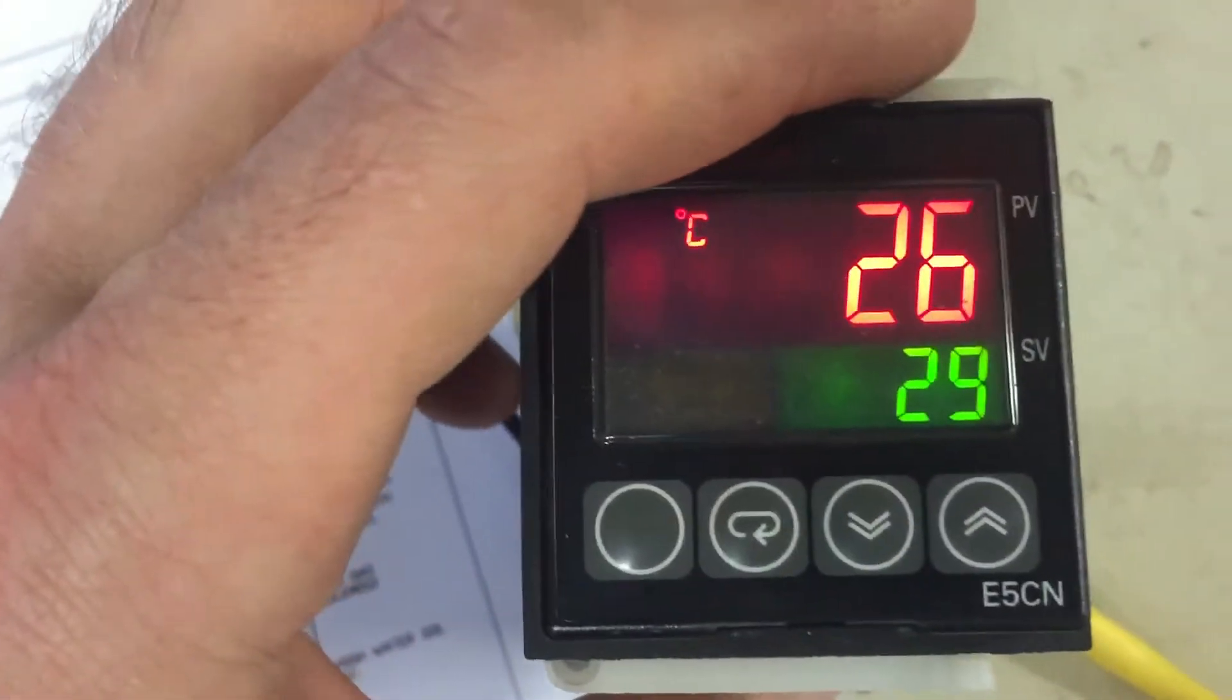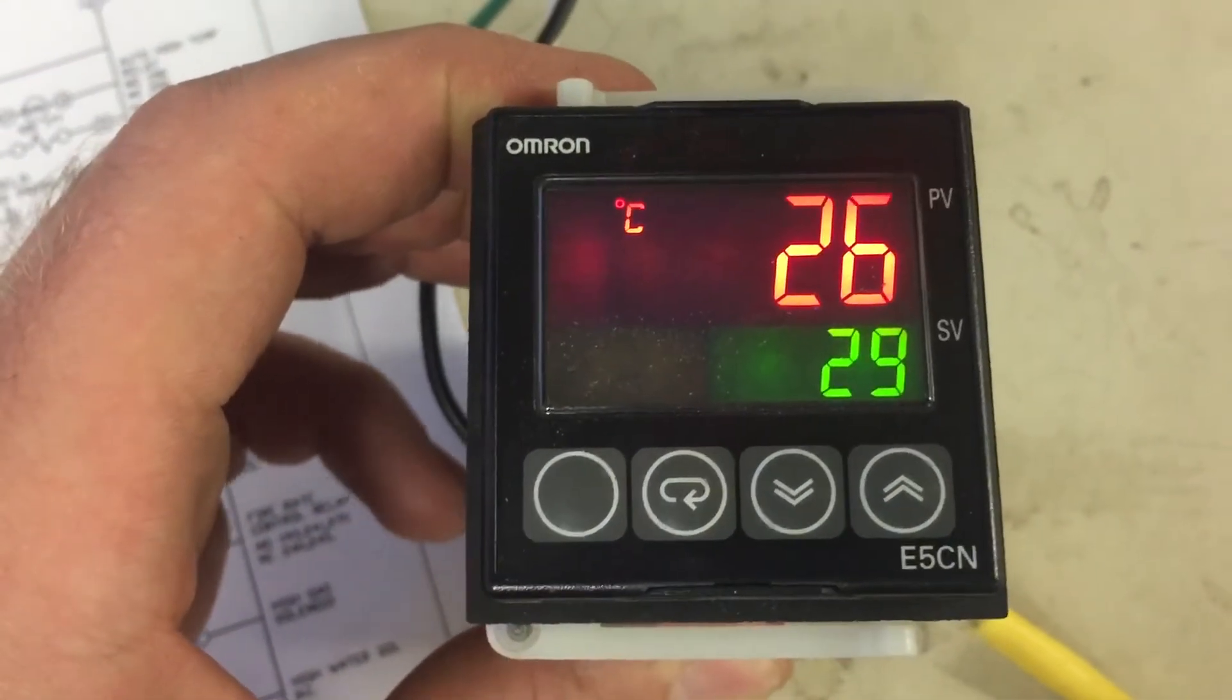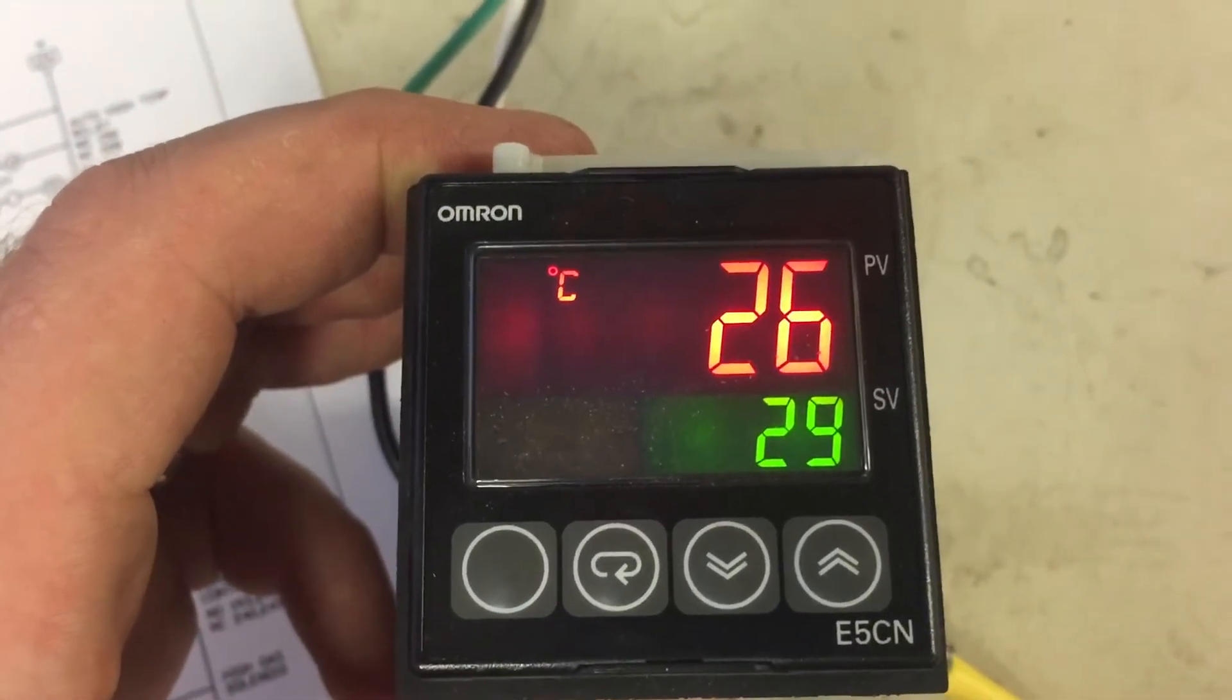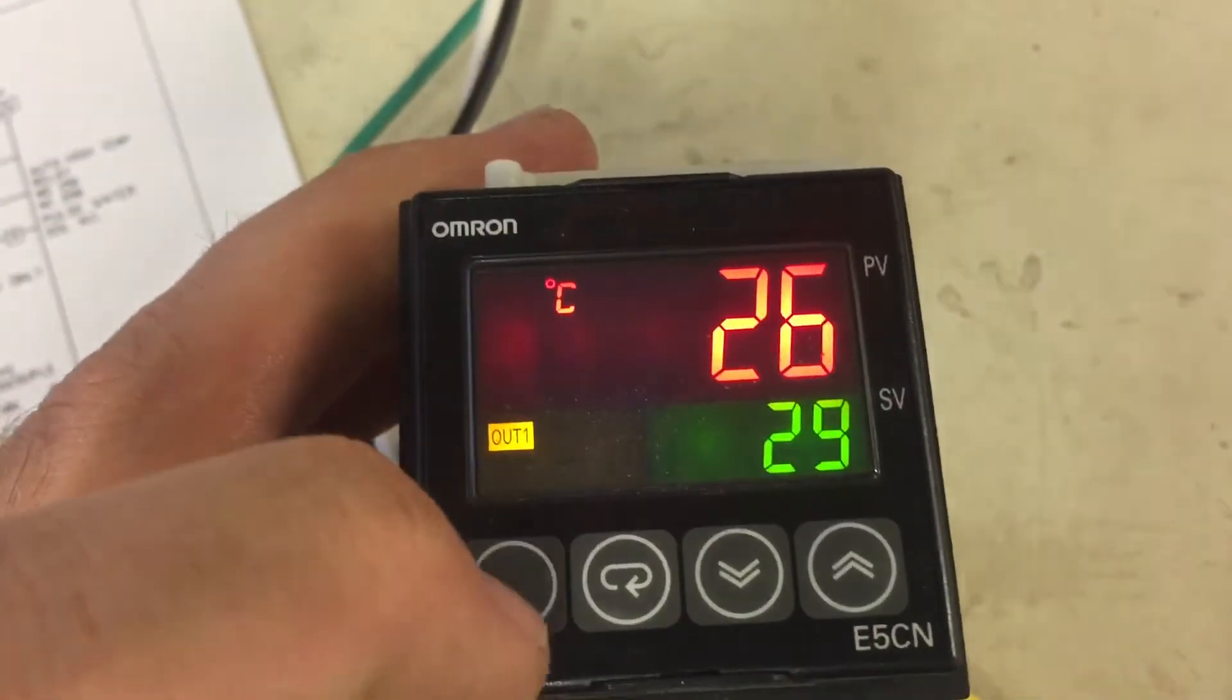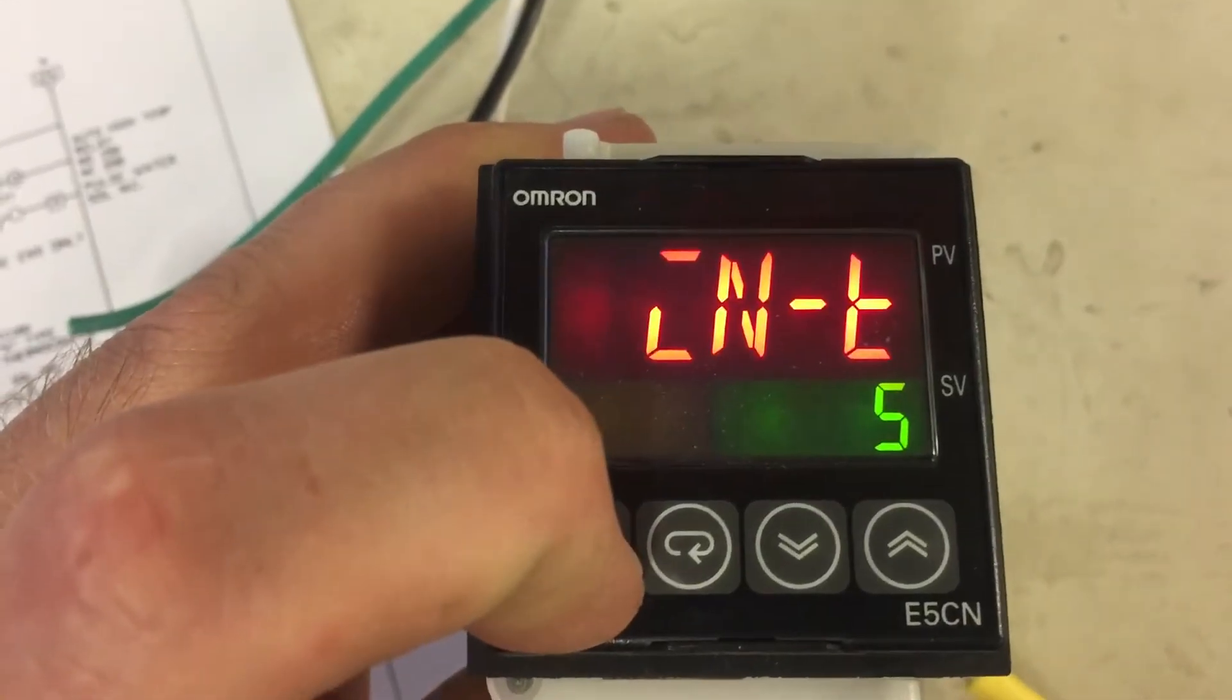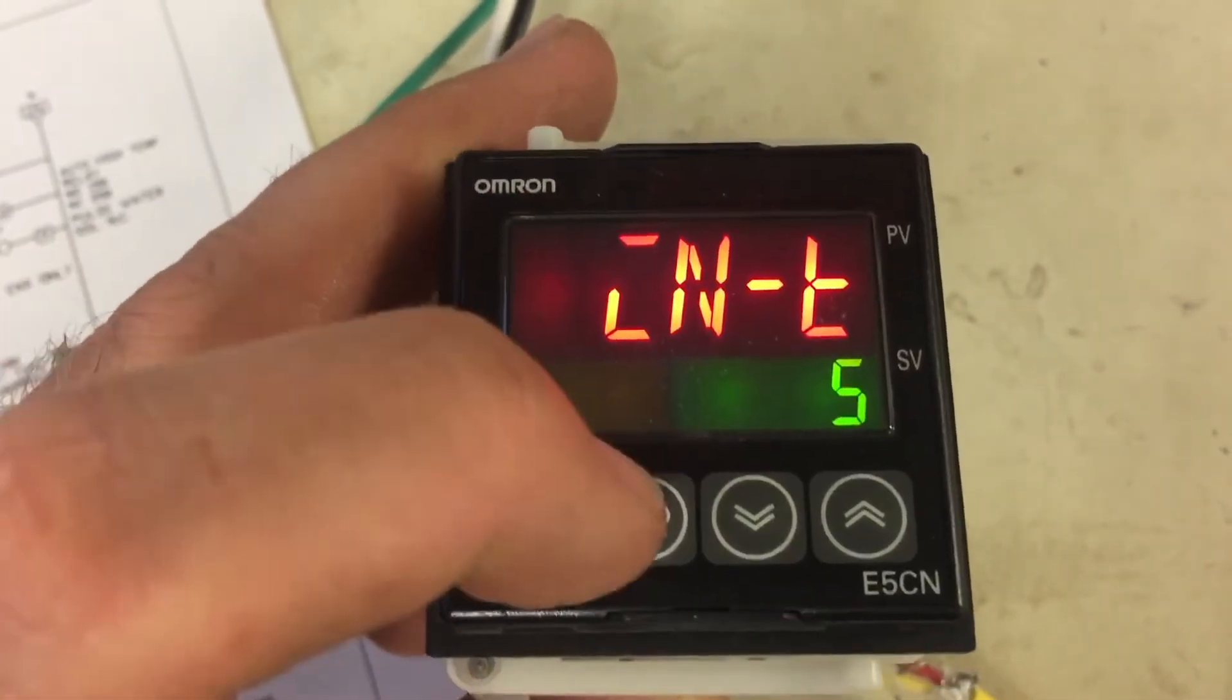What we have here on the face is what we normally start off with, which is the process value PV and the set value SV. To start programming this, you want to push and hold this first button here. Starts flashing. Now, it's IN-T, so input type.